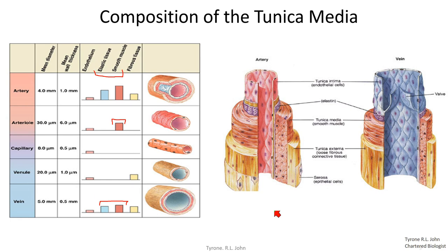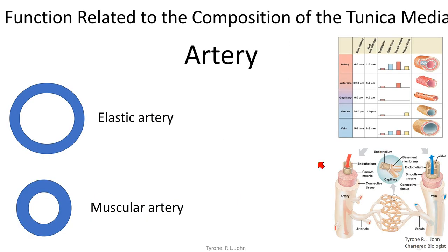Now we'll look at how each vessel functions based on what is in its tunica media, and the significance of a vessel not having a tunica media. Arteries can be split into two types: elastic arteries and muscular arteries.